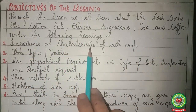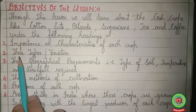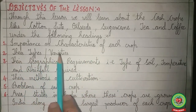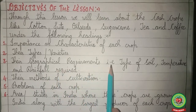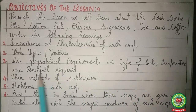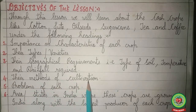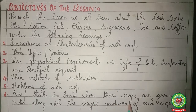We will study under the following headings: importance or characteristics of each crop, their types or varieties, their geographical requirements including type of soil, temperature and rainfall required, their methods of cultivation, problems of each crop, and the areas and states where these crops are grown in India along with the largest producer of each crop.